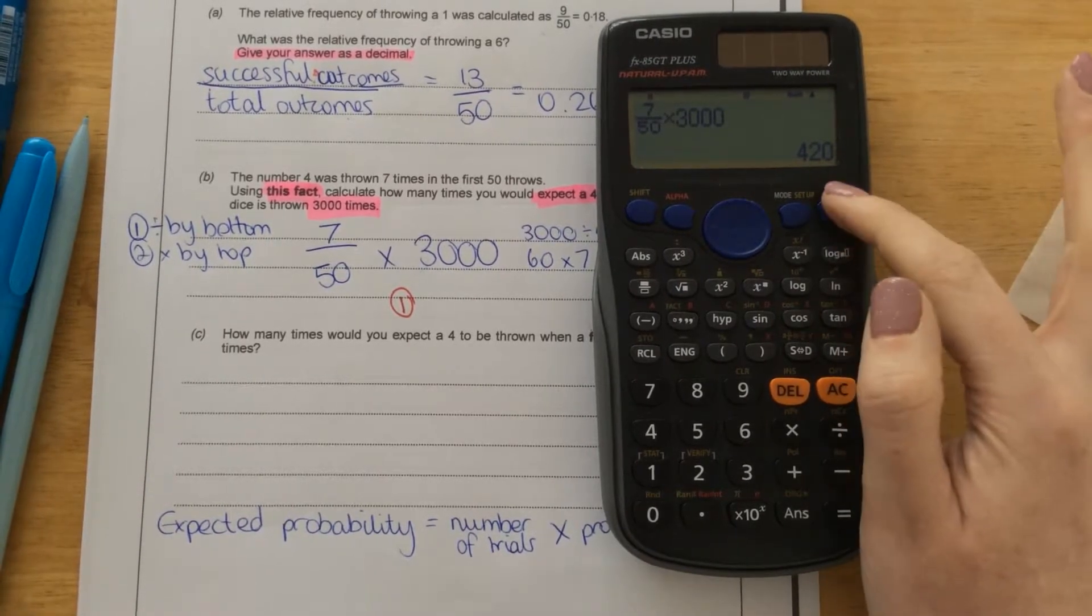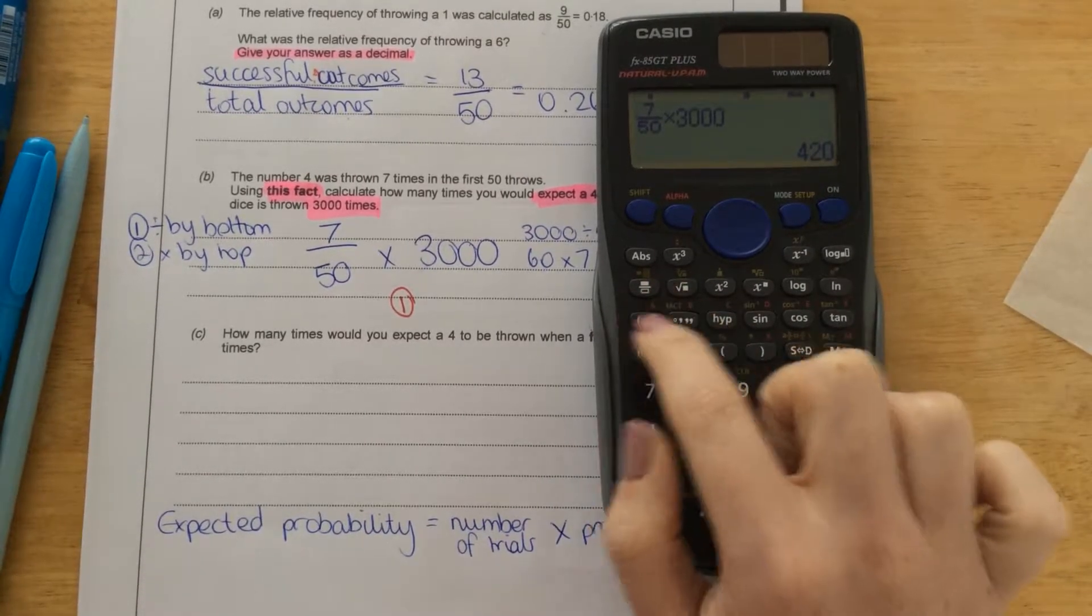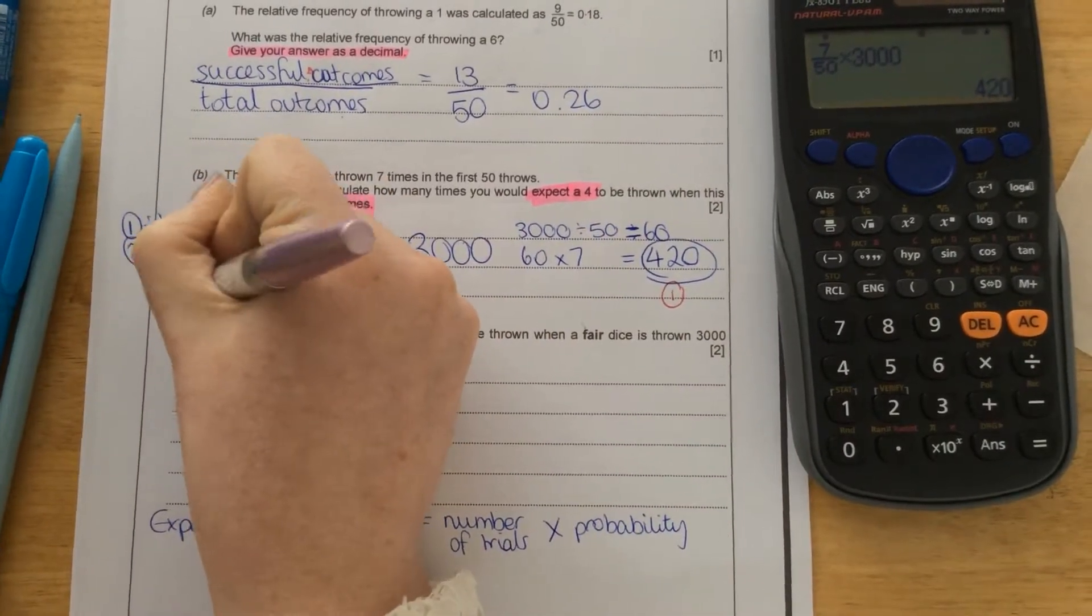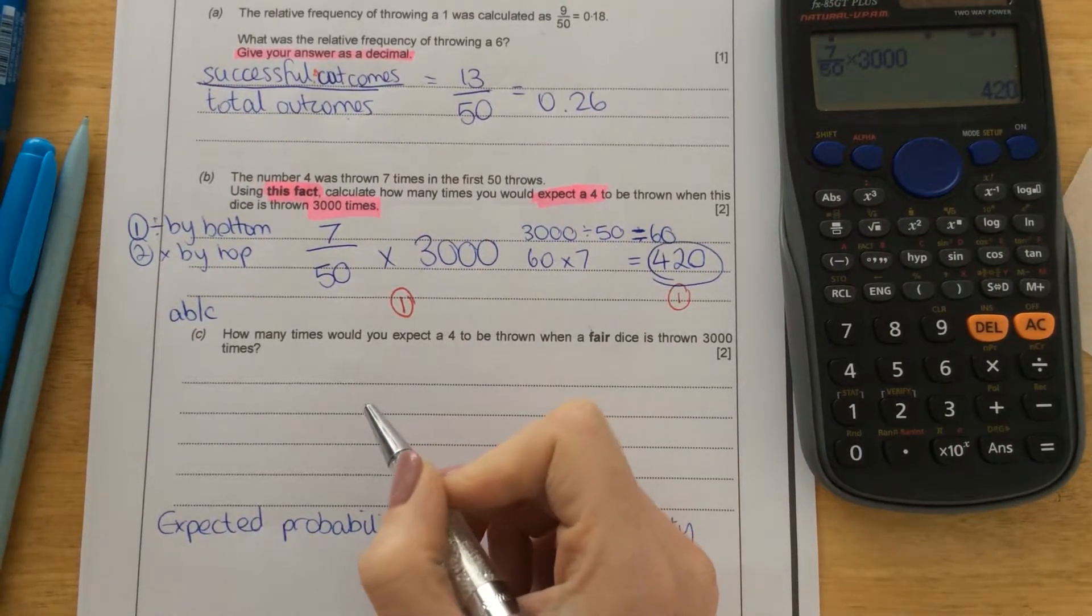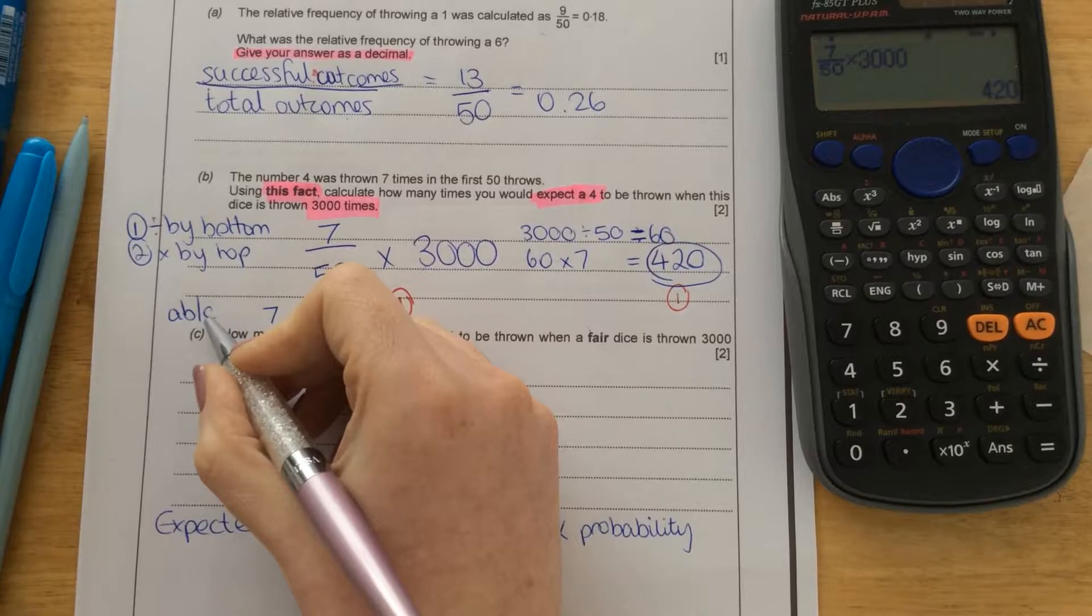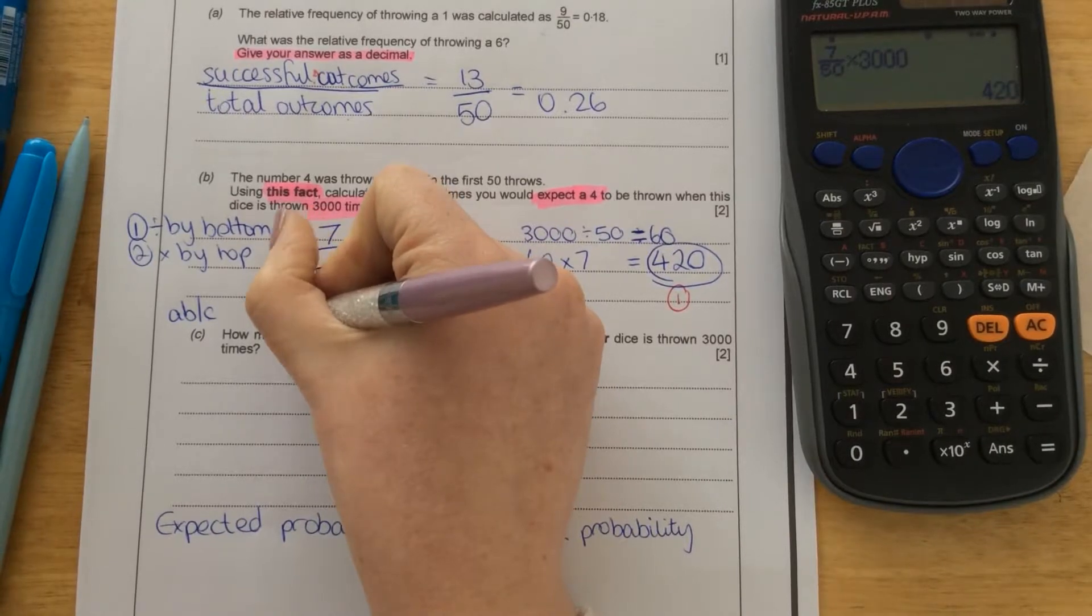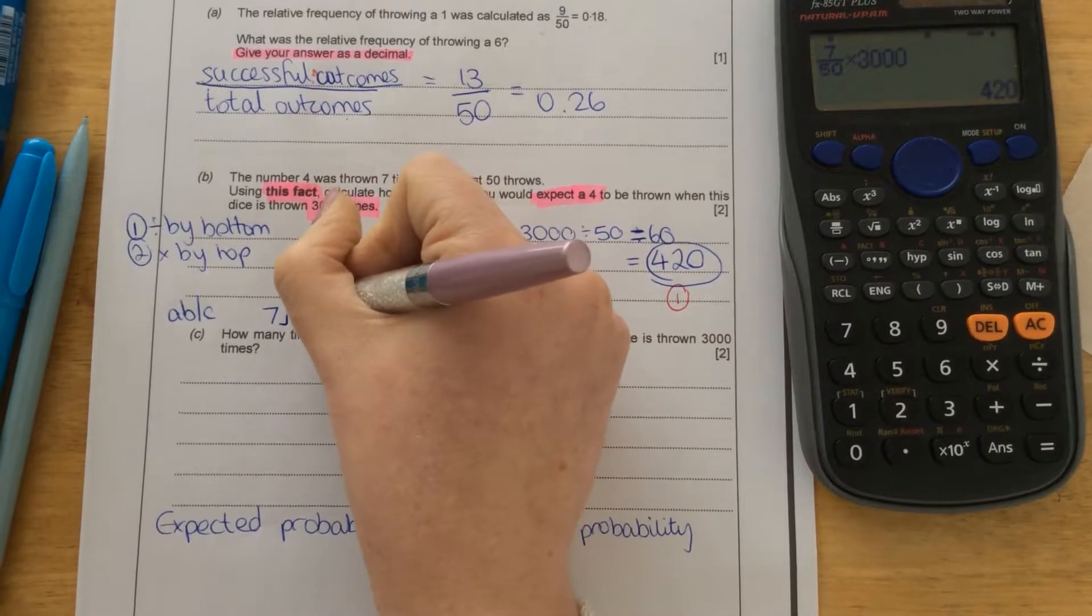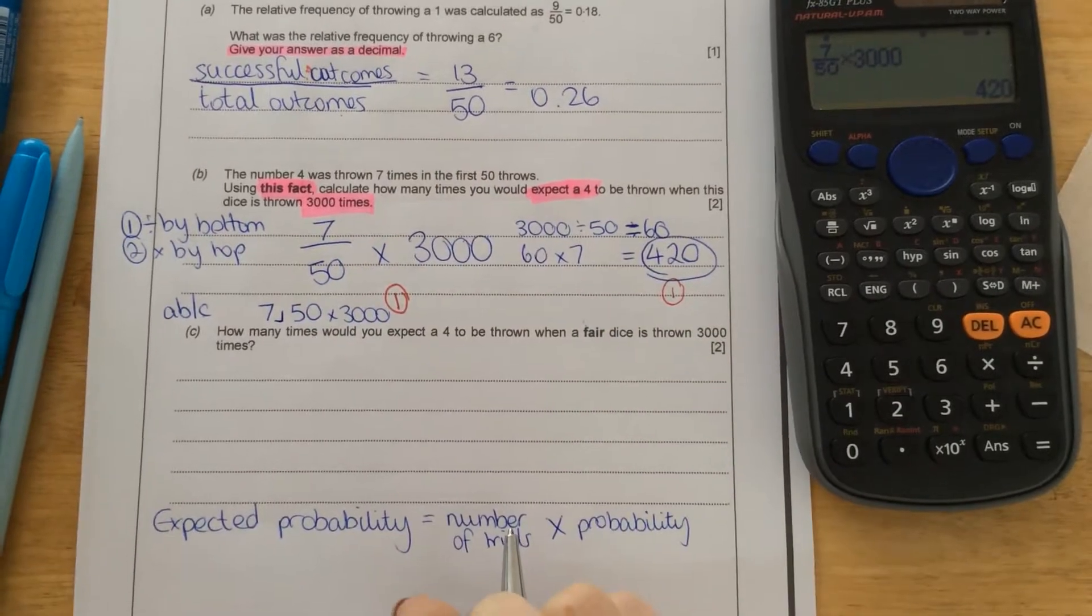If you're using a different calculator, one of the logic ones, then the fraction button is a little bit different. It's around the same place, but it looks like this. A, B, forward slash, C. So you could type 7 as your top number. Then type the fraction button. And on the calculator, to show your fraction line, you'll see a symbol that looks like that. And that tells you that you're going into the bottom of your fraction then. So just type 50. And then times 3,000. And that will give you the same answer.